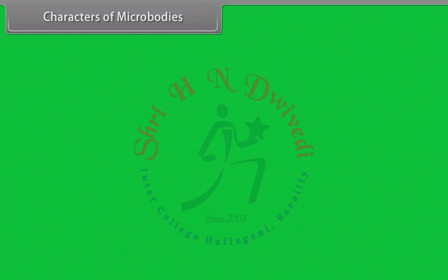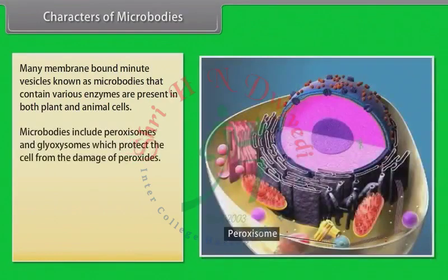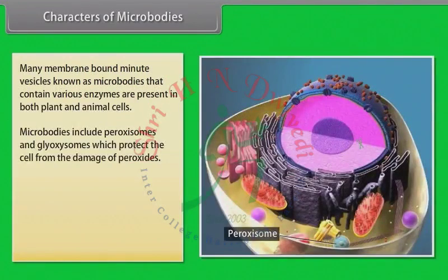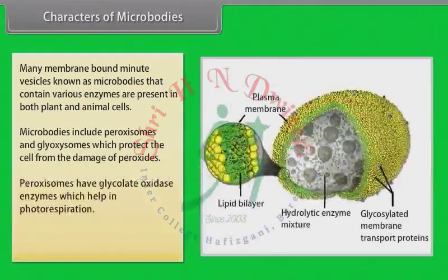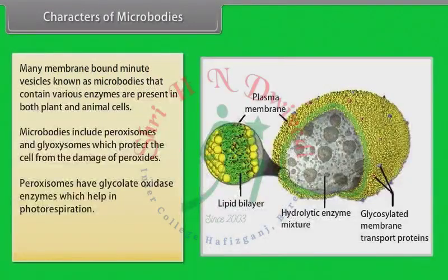Characters of microbodies. Many membrane-bound minute vesicles known as microbodies, that contain various enzymes, are present in both plant and animal cells. Microbodies include peroxisomes and glyoxysomes, which protect the cell from the damage of peroxides. Peroxisomes have glycolate oxidase enzyme, which helps in photorespiration. Spherosomes synthesize and store fat.